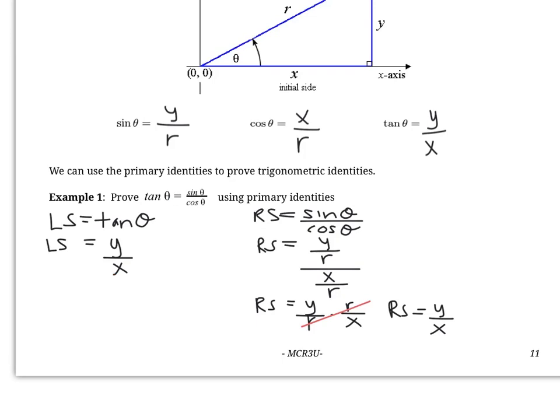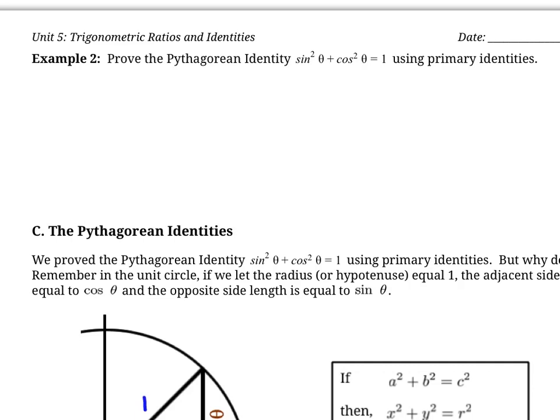Therefore, our left side is equal to our right side, and we've proven this identity using the primary trigonometric identities. Now we're asked to prove a new identity called the Pythagorean identity, and we're asked to prove it using the primary identities.